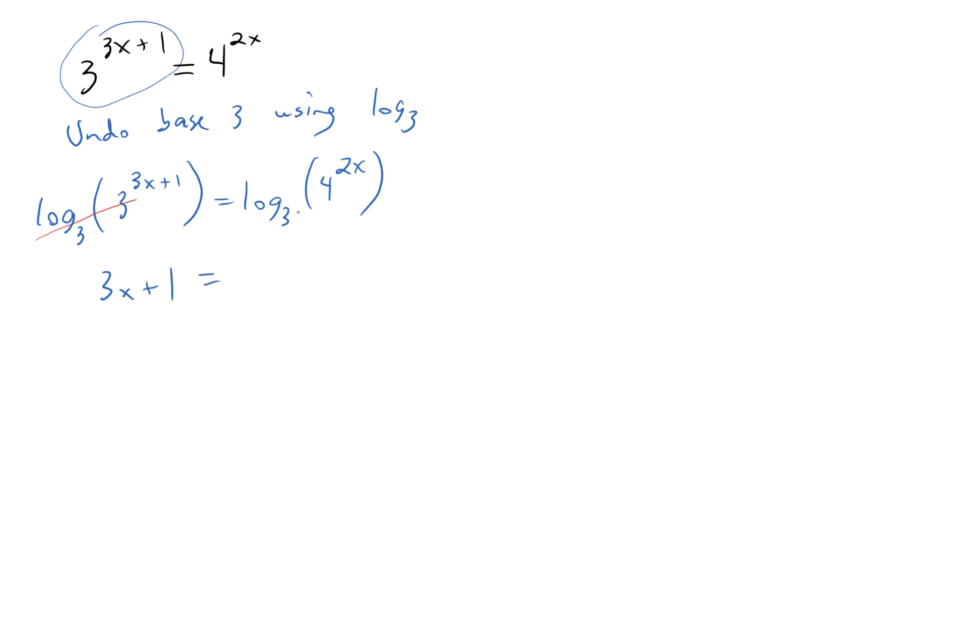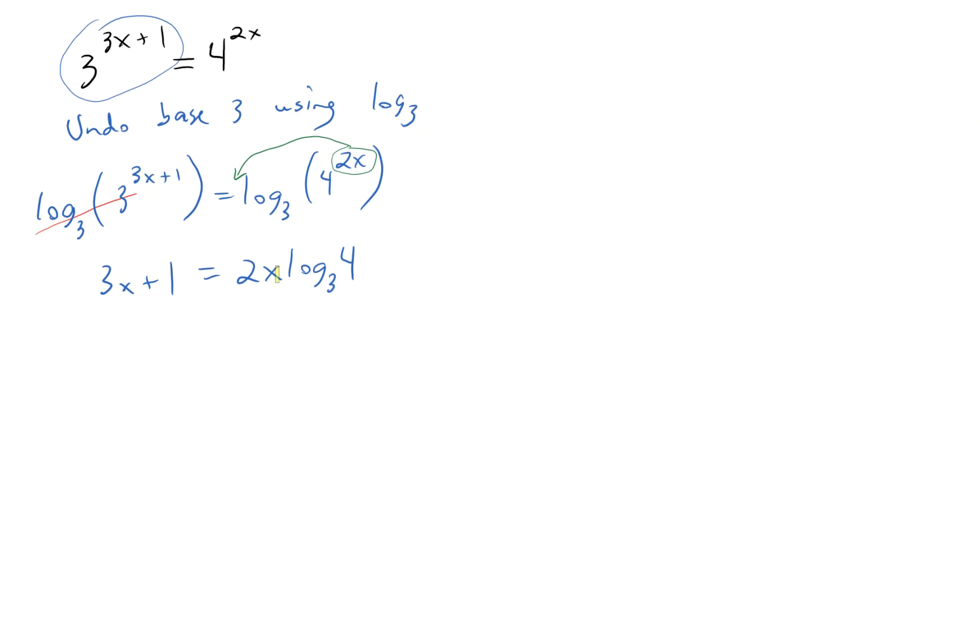And again, on the other side, log base 3 and exponential in base 4 don't cancel. But I use my logarithm law to turn my exponent into multiplication by a coefficient, giving us 2x times log base 3 of 4. Now, this is a little bit easier than last time, because there's no parentheses. I don't have to distribute anything. I've got this term with an x, and I've got this term with an x. So, I need to get my x terms on the same side. So, I'll subtract this guy, and I'll leave the 1 on the left. So, that's going to give me 1 equals 2x log base 3 of 4 minus 3x.